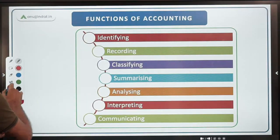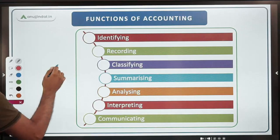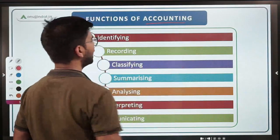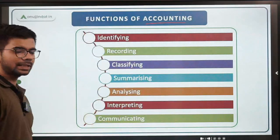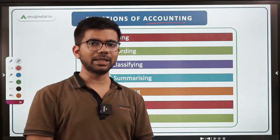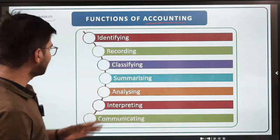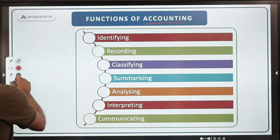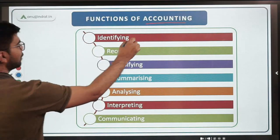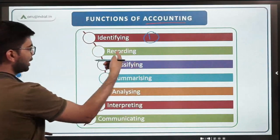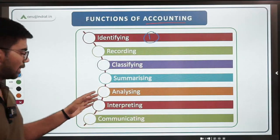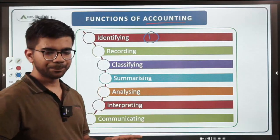Now, if we look at the functions of accounting in detail, there are seven steps: identifying, recording, classifying, summarizing, analyzing, interpreting, and communicating.